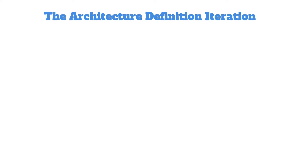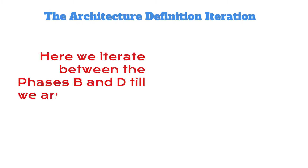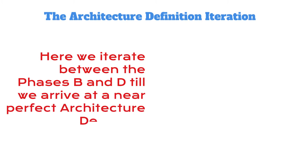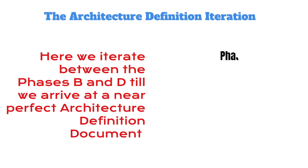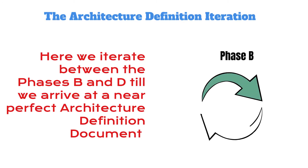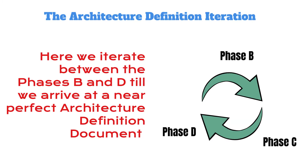The architecture definition iteration: here we iterate between phases B, C, and D — phase B, the business architecture; phase C, information and data architecture; phase D, the technology architecture. We iterate until we arrive at a near-perfect architecture definition document.